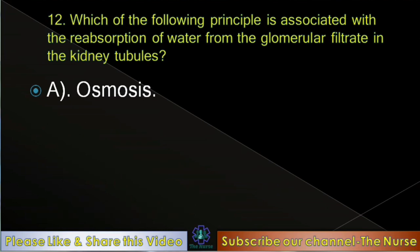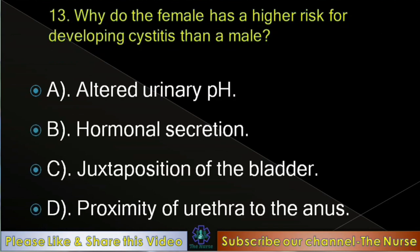Next question: Why do females have a higher risk for developing cystitis than males? Options: Altered urinary pH, hormonal secretion, juxtaposition of the bladder, proximity of urethra to the anus. Correct answer: Proximity of urethra to the anus.